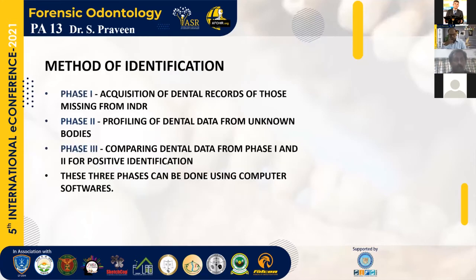Identification using this system comes in three phases. Phase 1 is the acquisition of dental records of missing persons from the Indian National Dental Registry. Phase 2 is the profiling of dental data from unknown bodies. Phase 3 is the comparing of dental data obtained from Phase 1 and Phase 2 for positive identification. This can be done even using computer software.